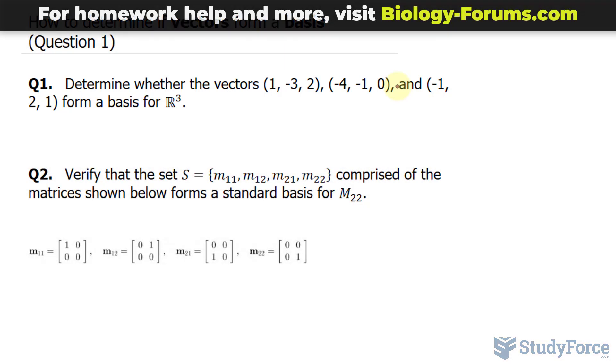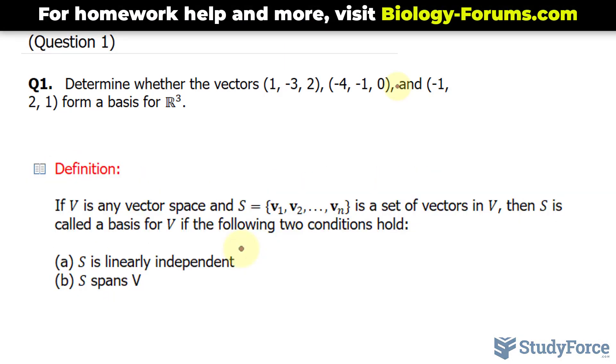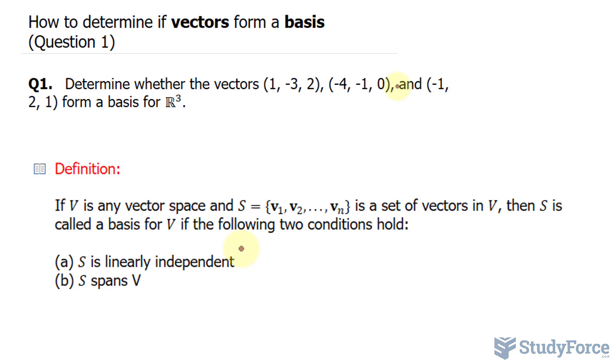To form a basis, two conditions need to be met. One, we have to prove that these vectors span, and we also have to prove that they're linearly independent. If we can prove both, then they form a basis.